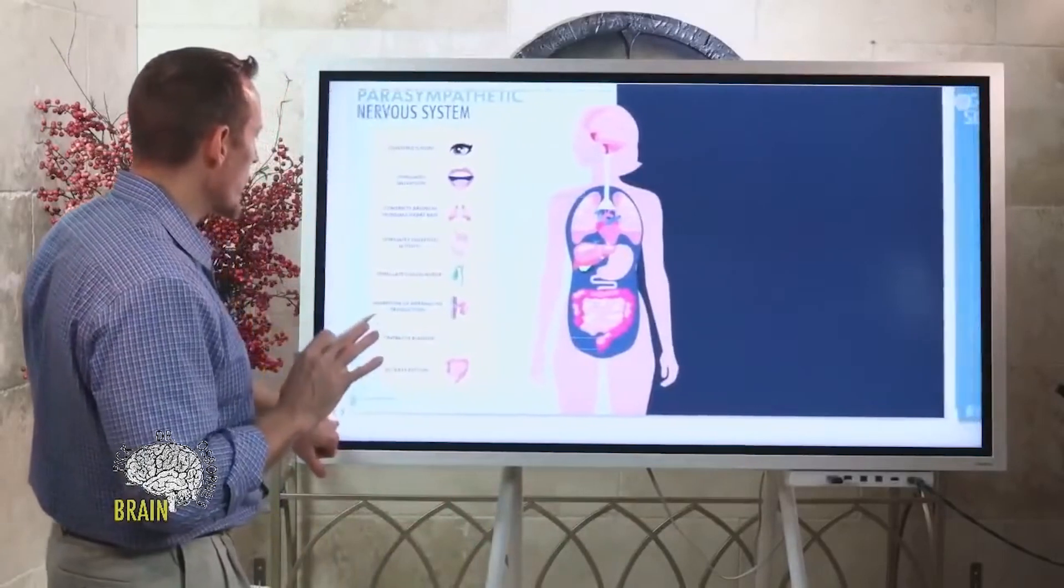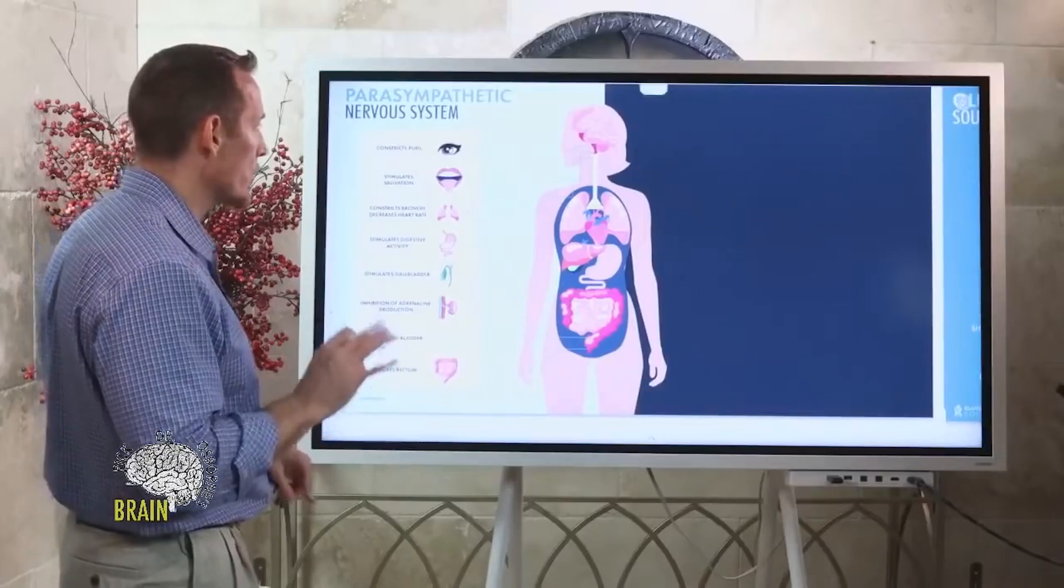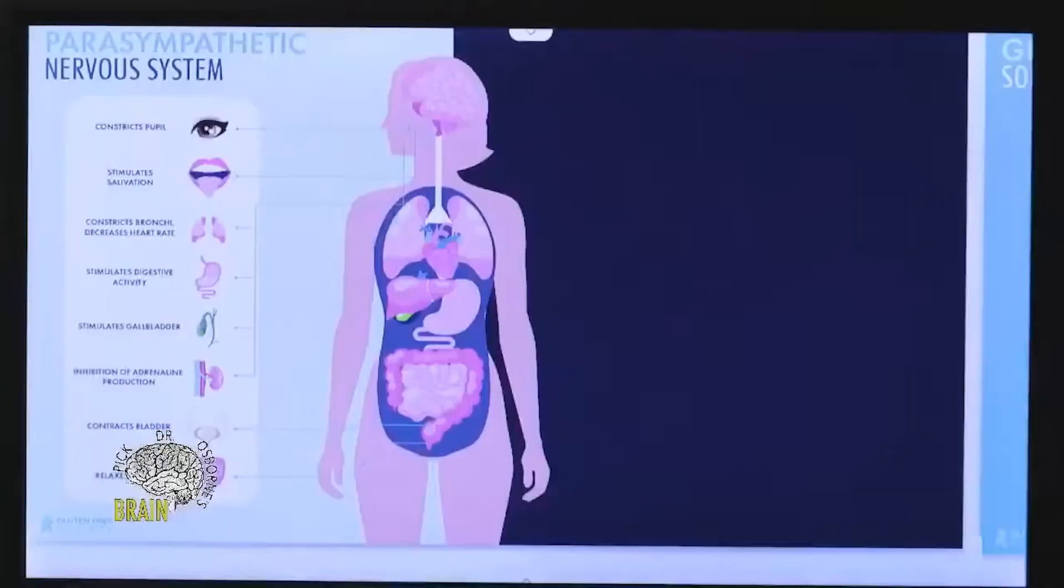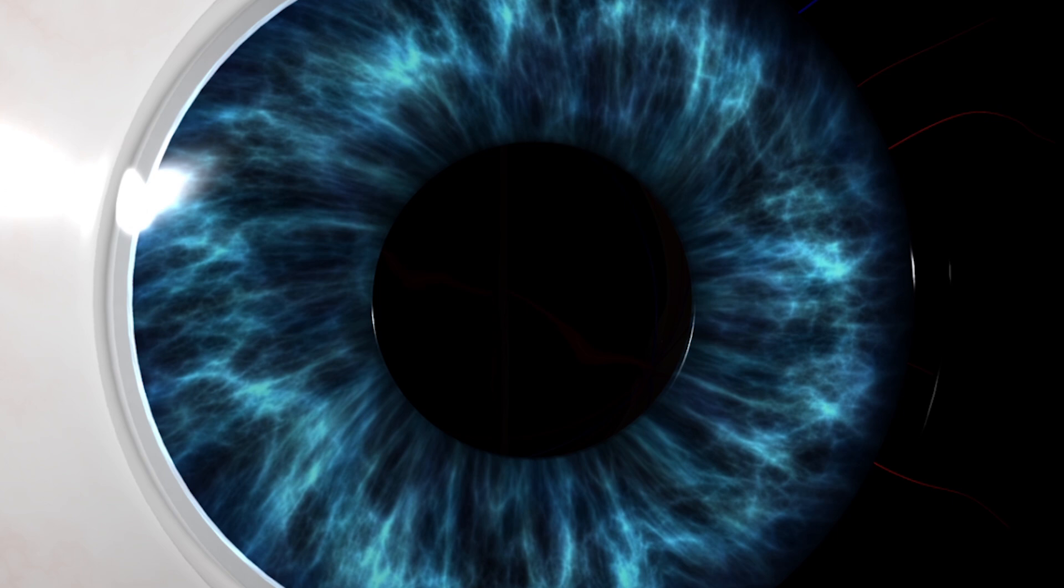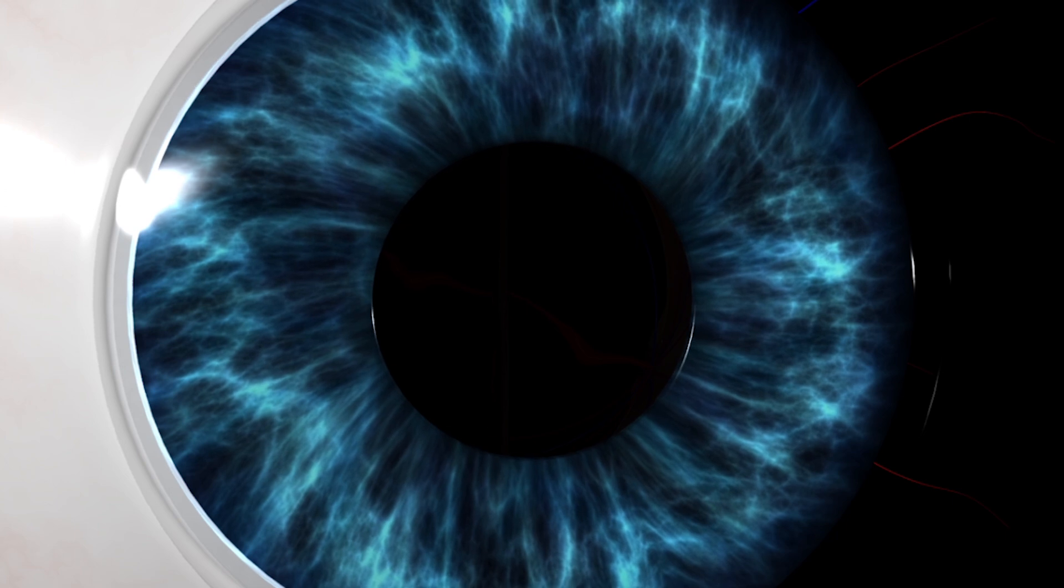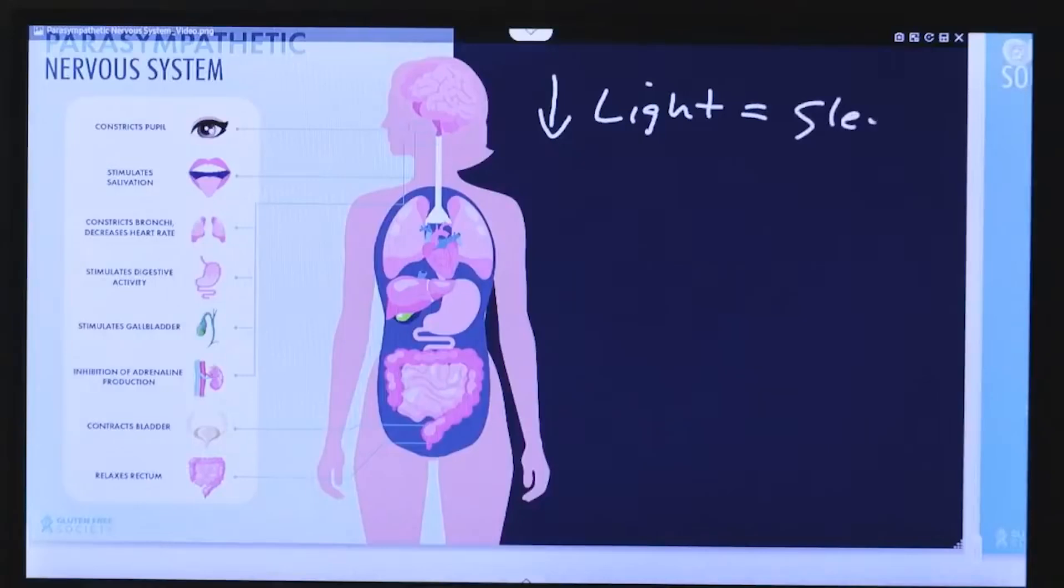When you're in a chronic state of sympathetic dominance as a result of poor or bad choices, then all of these things are affected. This diagram shows the parasympathetic nervous system's primary functions. Why do we want the pupil constricted? A constricted pupil reduces light. When do we want reduced light to the brain? When we're trying to sleep.